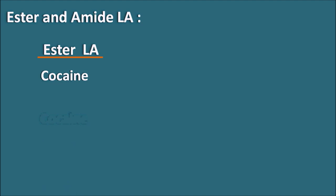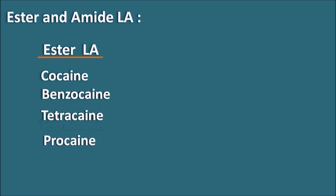Let us see the different examples for ester and amide local anesthetics. Ester local anesthetics include cocaine, which is one of the natural local anesthetics obtained from the coca alkaloids. Because of high euphoria and drug addiction, cocaine is nowadays not preferred as a local anesthetic. But some drugs related to cocaine are useful as local anesthetics. That is why most local anesthetics have the suffix '-caine', indicating they are local anesthetics. Other drugs in the ester group include benzocaine, tetracaine, and procaine.